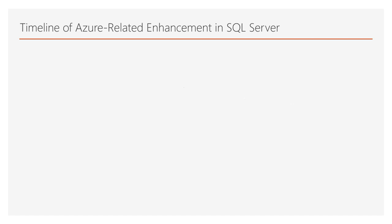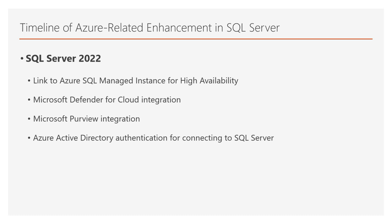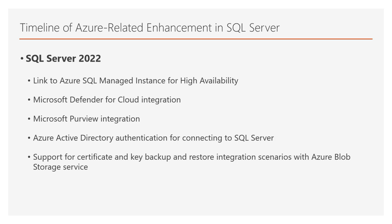SQL Server 2022 contains even more Azure integration features, which we will thoroughly discuss in later lectures and sections in this course. The Azure integration features added in SQL Server 2022 include the link to Azure SQL-managed instance for high availability, Microsoft Defender for Cloud integration, Microsoft Purview integration, Azure Active Directory authentication for connecting to SQL Server, support for certificate and key backup and restore integration scenarios with Azure Blob Storage Service, as well as the capability of installing the Azure Arc agent via SQL Server setup. Note that Azure Arc is a bridge that allows you to connect your on-premises SQL Server instances with the Azure cloud, and thus build platforms that have resources both on-premises and on the Azure cloud.